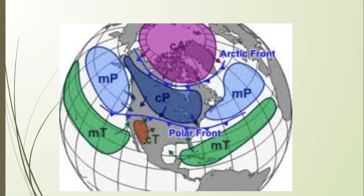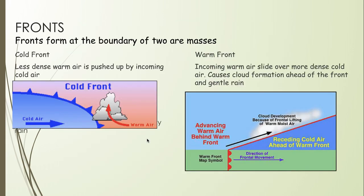Talking about air masses brought us to fronts. A front is a boundary between two air masses. When air masses meet, they don't mix because the air is at different densities. There are two main fronts to know. A cold front looks like blue triangles on a weather map. Less dense warm air gets pushed up by the denser cold air. At a cold front, cloud formation occurs and storms or heavy rain may happen.